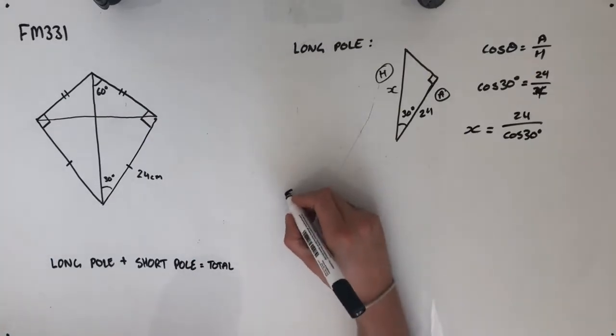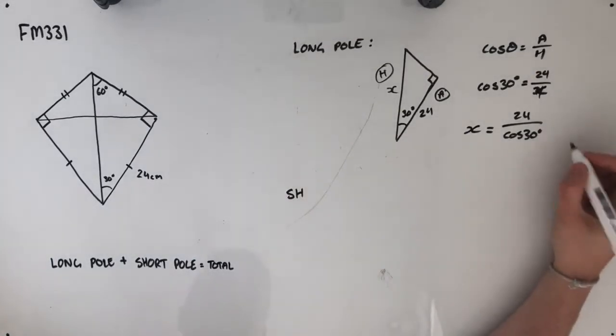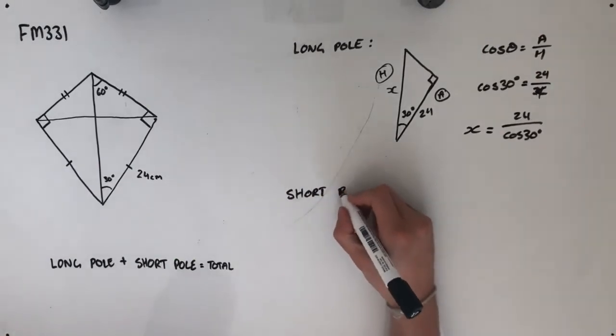So if that's our long pole length there, we've got 24 over cos 30 centimeters. Now we can have a look at our short pole.